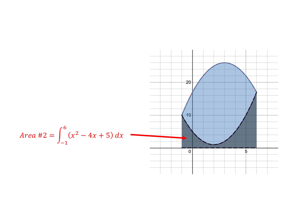Well, now to find the area between the two curves, I need to find the area beneath the lower curve. And we'll call this area 2. Again, we're going from minus 1 to 6, but now we're figuring out the area beneath this curve, which is x squared minus 4x plus 5, this darker area here.